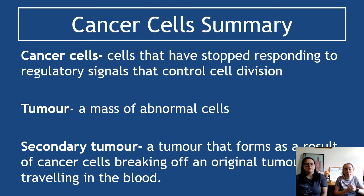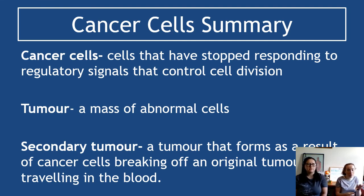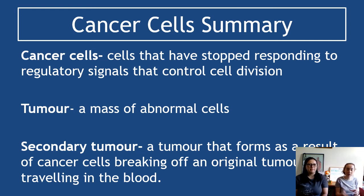Summary of cancer cells and what's really important to know: cancer cells are those that have stopped responding to regulatory signals that control cell division. A tumour is a mass of abnormal cells — not the first sign of cancer, but something that appears after cancer cells have built up together. A secondary tumour arises when original cancer cells break off from a tumour, travel in the blood to a new site, and form a new tumour at a secondary location.